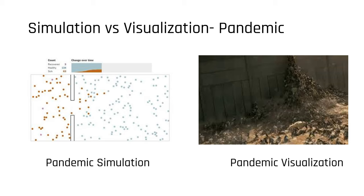Another example, apt for 2020, is pandemic simulation. This was from a Washington Post article — they simulate all these dots representing infected people and you can make decisions about what happens if you do social distancing or quarantine people. On the right is the ultimate pandemic visualization — World War Z — where zombies pile up and climb over each other like ants to scale a wall. That's actually a complicated simulation with tens of thousands of pieces.